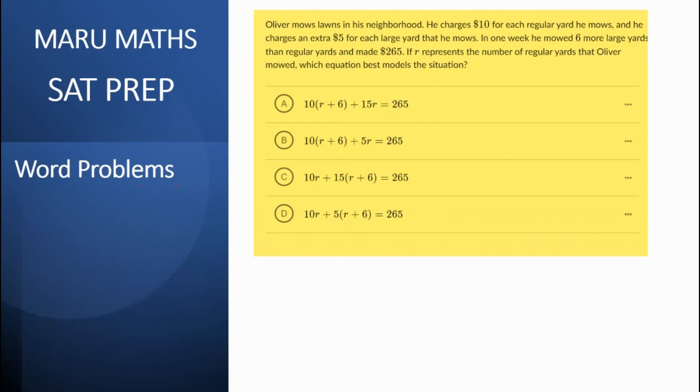So the next question is Oliver mows lawns in his neighborhood. He charges $10 for regular yard and five extra for a large yard. In one week, he mows six more large yards. So if we say x is the number of regular yards, regular lawns, then x plus six would be the number of large yards that he is mowing.